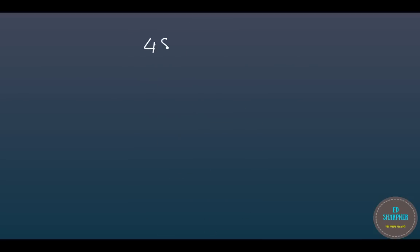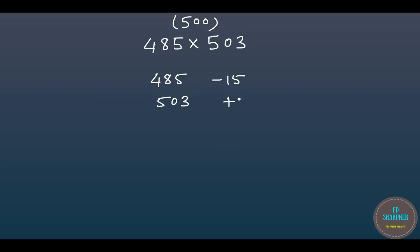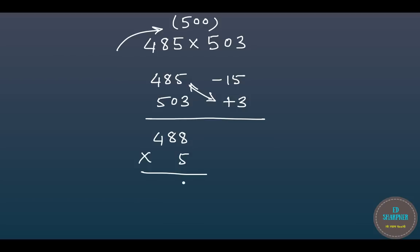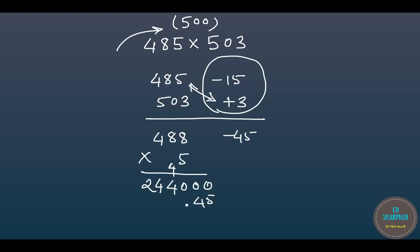Let us do another example: 485 multiplied by 503. The base is 500. Write 485 with minus 15 and 503 with plus 3. Combining diagonally gives 488. Because the base is 500, which is 5 times the primary base, we multiply the left-hand side by 5 to get 2440. Then put two zeros and add the right-hand side product of minus 45. So we subtract 45 from 244,000 to get 243,955.